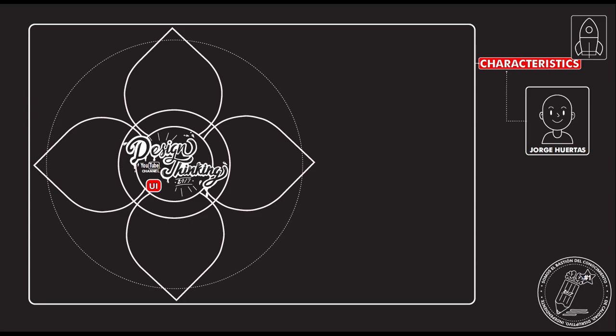When we talk about UI, the first thing to keep in mind is brand identity. We need to know the graphic line of the brand we are working on, and with all of those components we start giving identity to the development. Also the color of the company is very important. A good user interface shows the brand identity but is also very easy to navigate.